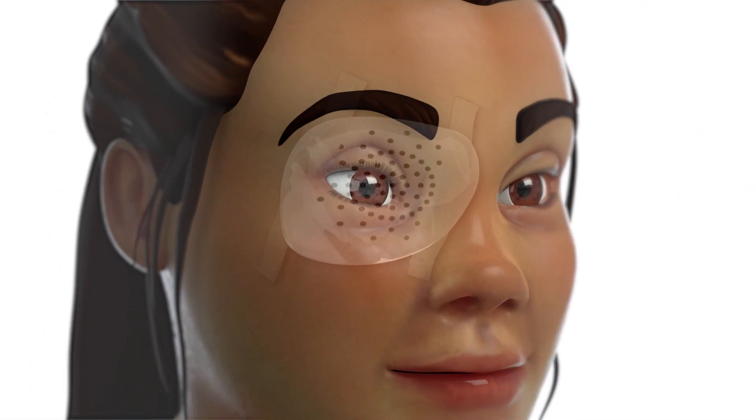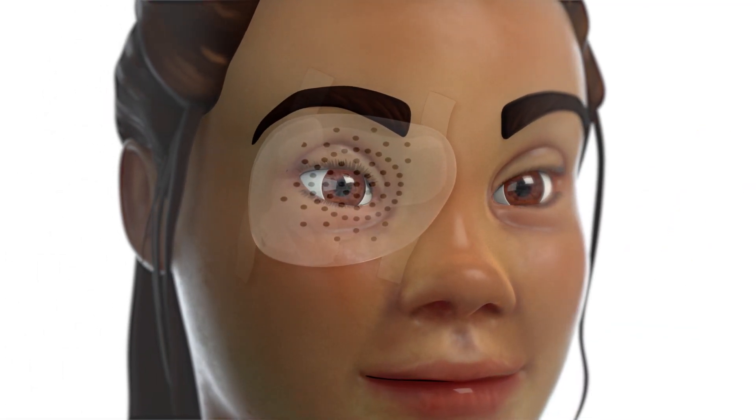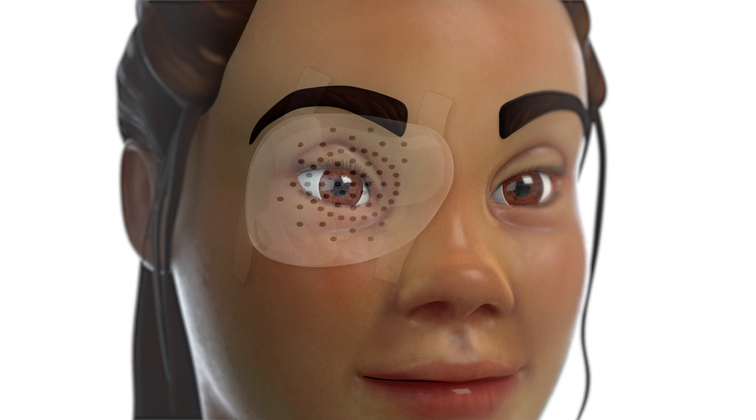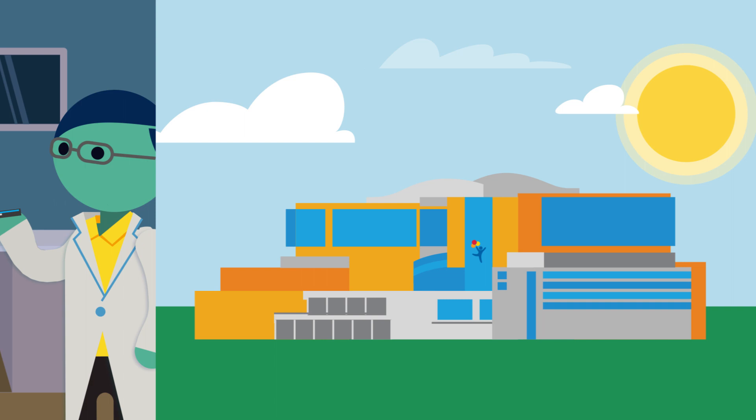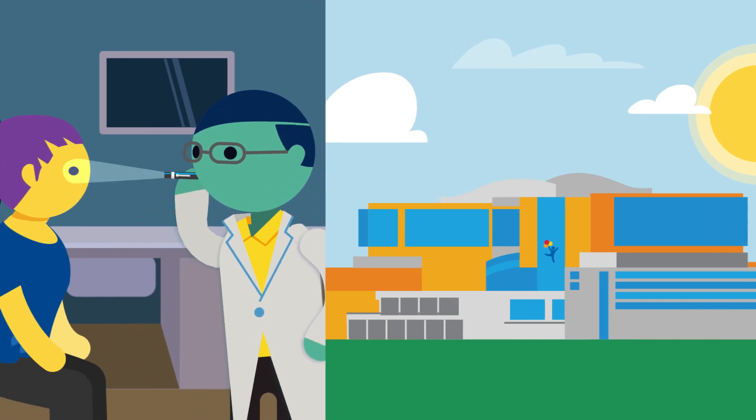A shield will be placed over your eye before you go home, which should be the same day. You will need to return for multiple visits so your ophthalmologist can check to make sure your eye is healing properly.